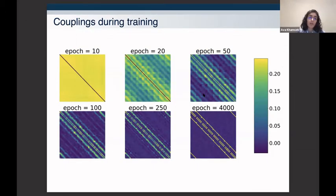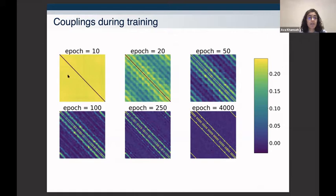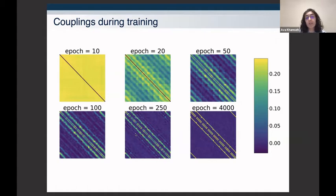It's interesting to look at how the couplings change throughout training. At the beginning, with randomly initialized weights, no patterns appear anywhere. As training proceeds through higher epochs, nearest-neighbor and next-nearest-neighbor couplings start occurring, and after a while the next-to-next-nearest-neighbor couplings that don't exist in the data disappear. In the final trained machine we see a clean pattern distinguishing non-nearest neighbors from nearest-neighbor couplings at the right values.